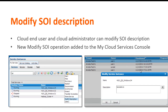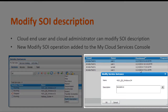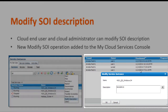From the list of services, you can select the service offering instance and click the operator action modify description. The modify service instance dialog box is displayed. You can change the description as required and click OK.